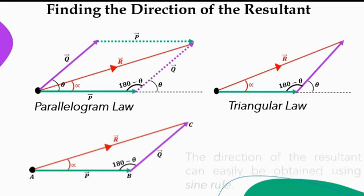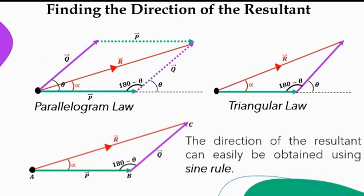And then the alpha, the angle alpha is gotten by sine rule. I didn't mention previously that do well to review sine rule and cosine rule in case you are not familiar with them because the scope of this lesson does not cover explanation of sine and cosine rule. So while the magnitude of the resultant is obtained by cosine rule, the direction is obtained by sine rule.